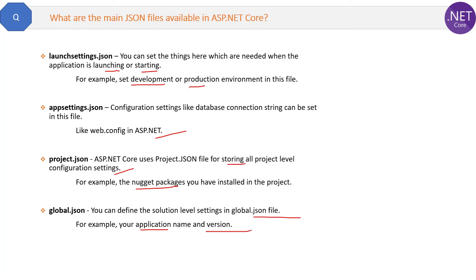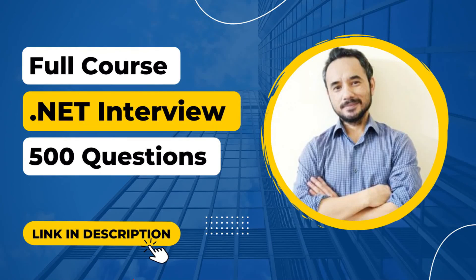So these are the four important JSON files available with an ASP.NET Core application. This is the answer to this question. If you have any query, please let me know in the comment section and I will try to reply as soon as possible. Thank you so much for watching.